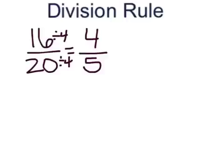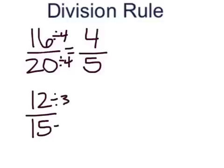Now let's consider the fraction twelve-fifteenths. What is a number that goes evenly into both of these numbers? Since fifteen is not an even number, we know that it can't be two, but three does go evenly into both of these numbers. Twelve divided by three is four, and fifteen divided by three is five. So an equivalent fraction for twelve-fifteenths is four-fifths.